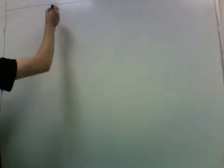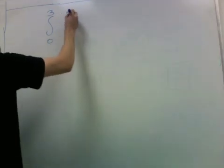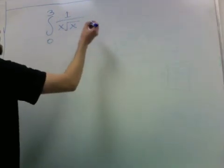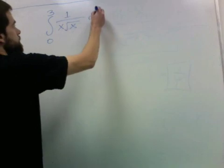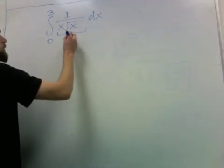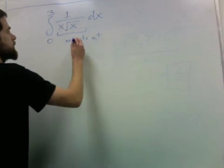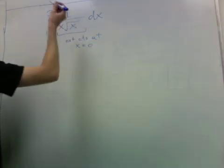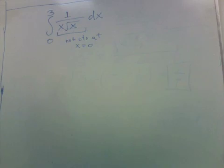Now let's look at some examples where we're integrating a function that may be discontinuous in the interval that you're integrating over. So let's try integral from 0 to 3 of 1 over x times square root of x.